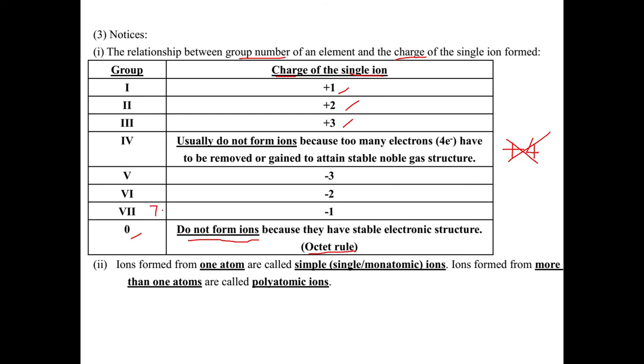For Group 0, very stable, so no need to gain or lose electron. So do not form ions because they obey the octet rule. For helium obey the doublet rule. For 7, outermost shell is seven, so gain one electron become minus one. Group 6, outermost shell six, six plus two is eight, so minus two. And Group 5, five plus three electrons become minus three. For Group 4 does not form an ion. In the future we learn the covalent bond.